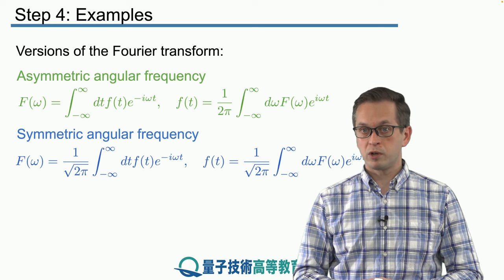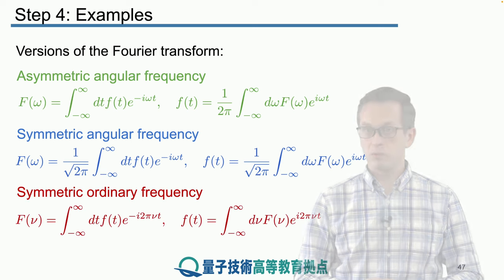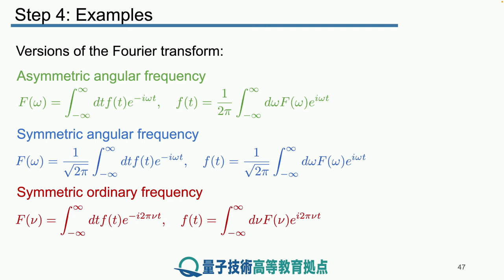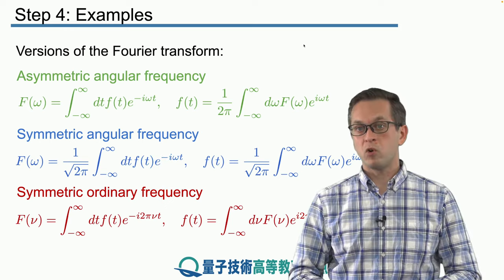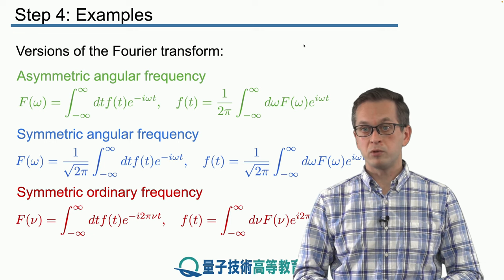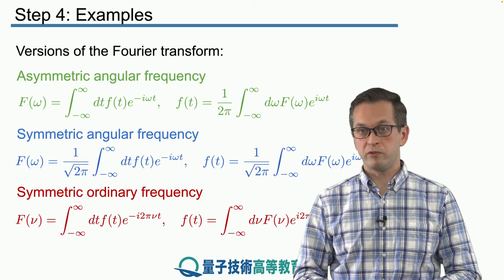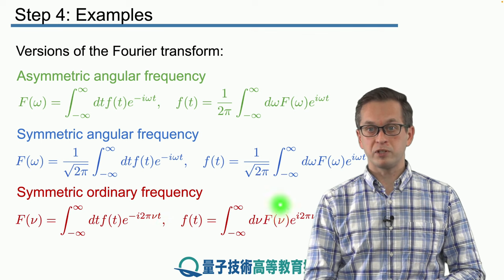Or you don't have to work with angular frequencies. You can work with ordinary frequencies. And in that case, what you have to do is you have to substitute for omega your ordinary frequency nu. And we know that omega is the angular frequency is equal to 2 pi times nu, the ordinary frequency. So you can have the following expression.